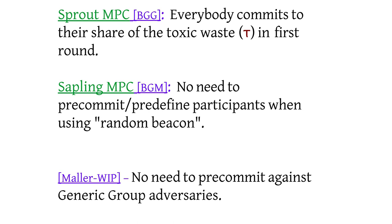The new idea in Sapling is that if we contribute to the secret tau with some public randomness — which seems silly, but if you do that, you use what's called a random beacon to add some randomness to tau — you can do away with this pre-selecting of participants and pre-committing to their randomness. Now participants can be chosen on the fly, and they just need to protect this secret randomness for 20 to 30 minutes while their computer is doing the computation.